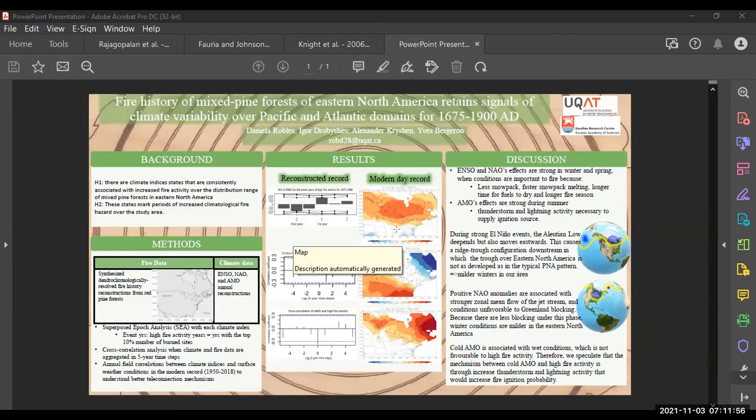So let's move to my results. So when I conducted superposed epoch analysis, only ENSO yielded a significant pattern. And during high fire activity years, ENSO had a positive anomaly from its mean, which is indicative of El Niño. And when I conducted a field correlation analysis in the modern records, ENSO also is associated with higher temperature in the area, in the months preceding the fire season in the winter and the spring. You are looking at this picture, an average from January to April.